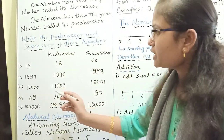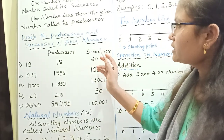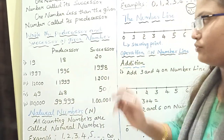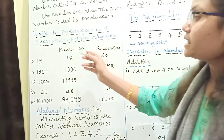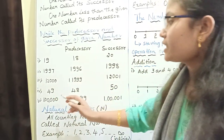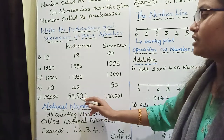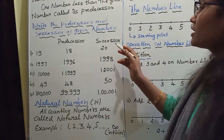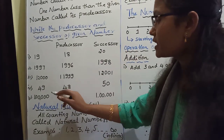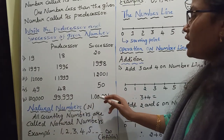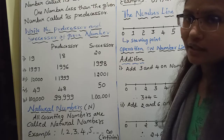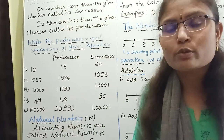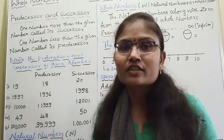Producer of 49 is 48, successor of 49 is 50. Producer of 1,000,000 is 999,999, successor of 1,000,000 is 1,000,001. I hope you understood about producer and successor.